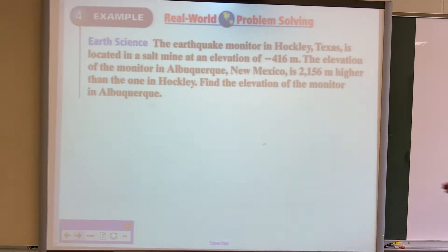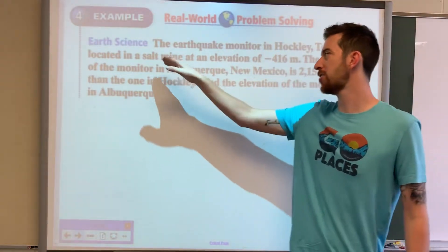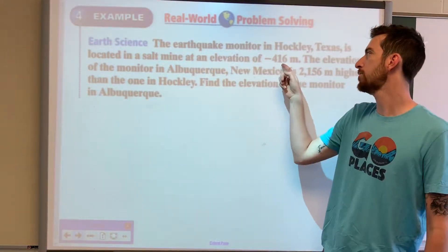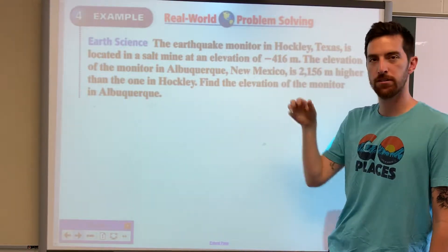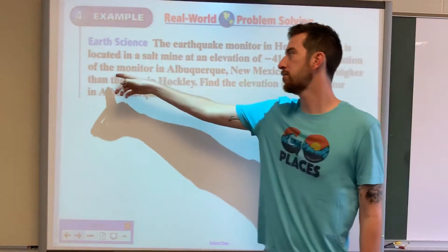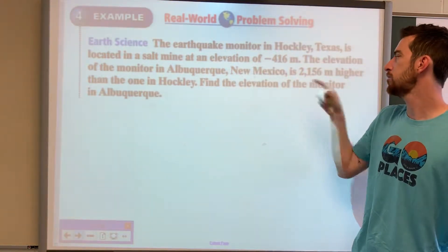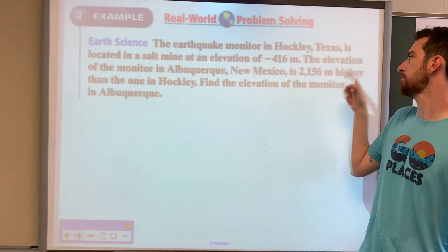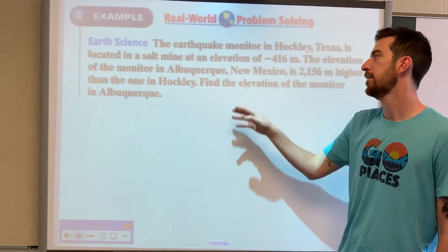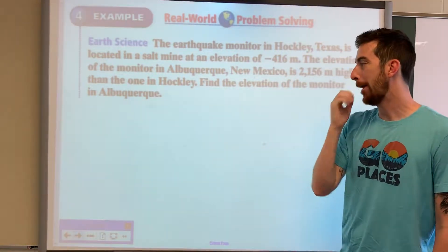The earthquake monitor in Hockley, Texas is located in a salt mine at an elevation of negative 416 meters — that's below sea level. The elevation of the monitor in Albuquerque, New Mexico is 2,156 meters higher than the one in Hockley. Find the elevation of the monitor in Albuquerque.